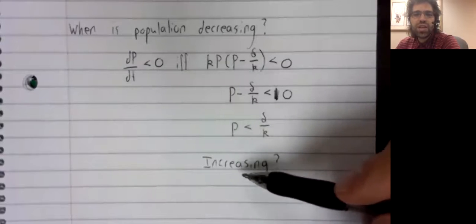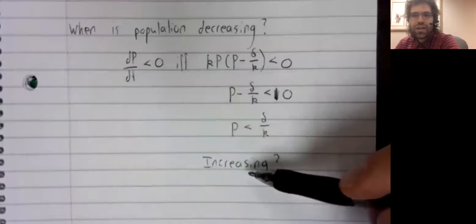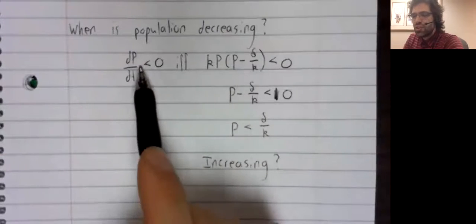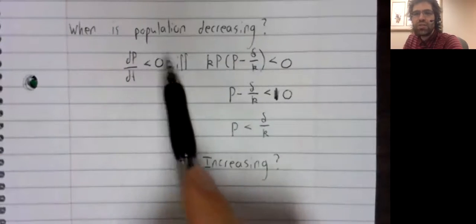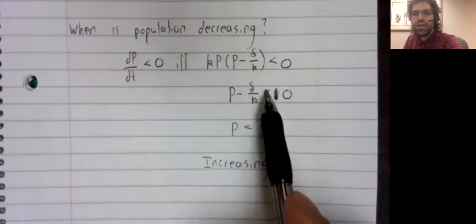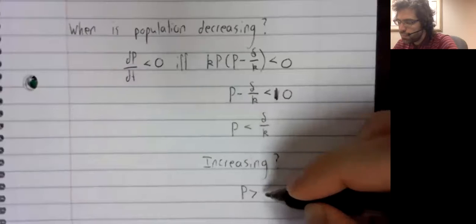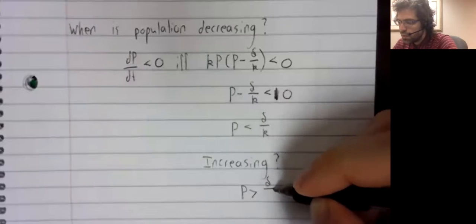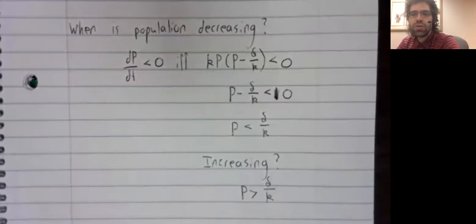The population is increasing. And to answer that question, it's literally all of this, except each of these inequalities is flipped around. The population is increasing if p is greater than delta divided by k.